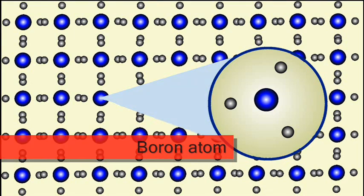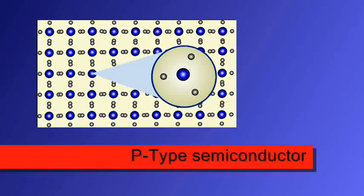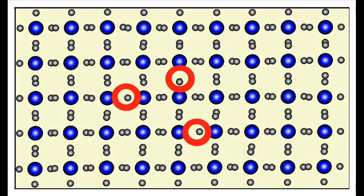Boron atoms are used to make P-type semiconductor. It contains less electrons on an outermost orbit than silicon. These created holes are free to move around.